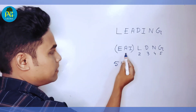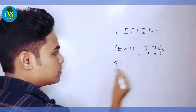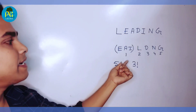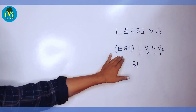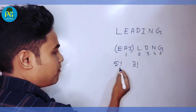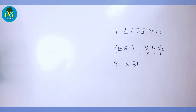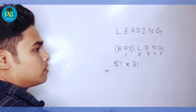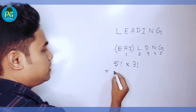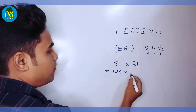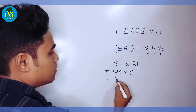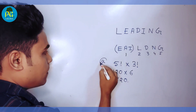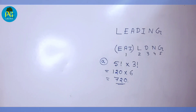Now these 3 vowels can also be arranged among themselves in 3 factorial ways. So the total number of ways where the 3 vowels always come together is 5! × 3! = 120 × 6 = 720. So the answer to question A is 720.